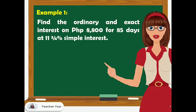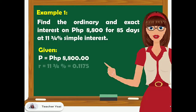Find the ordinary and exact interest on P8,800 for 85 days at 11.34% simple interest. The given: we have the principal amount which is P8,800, the rate which is 11.34% or equal to 0.1175, and time is given for 85 days.